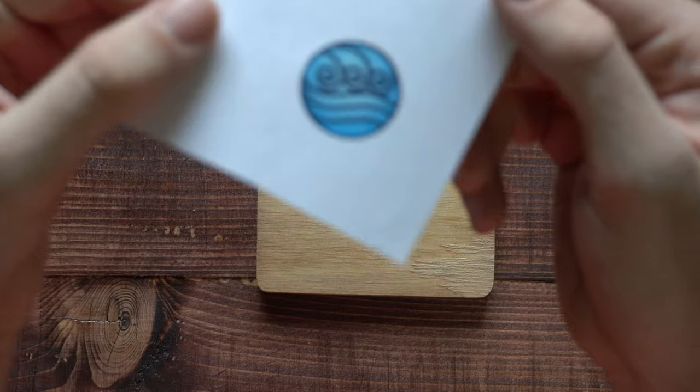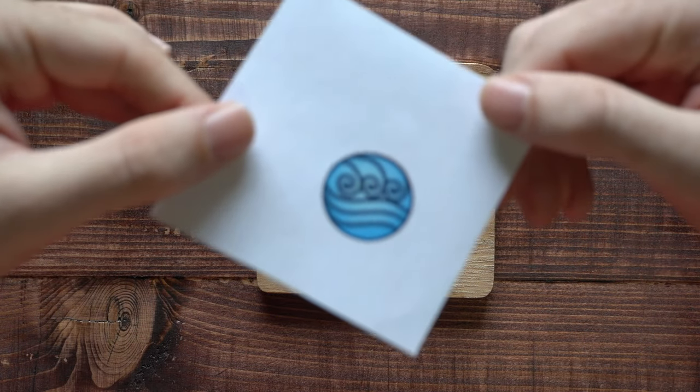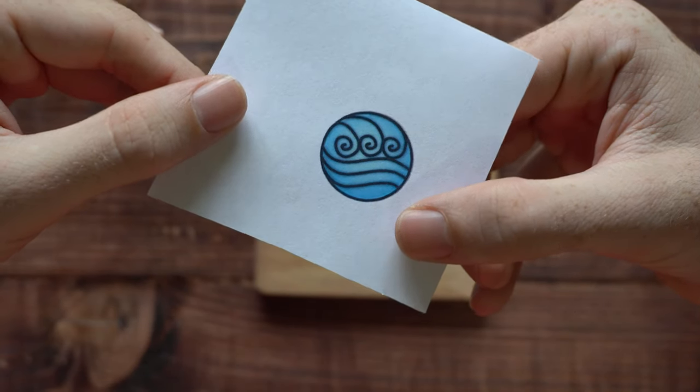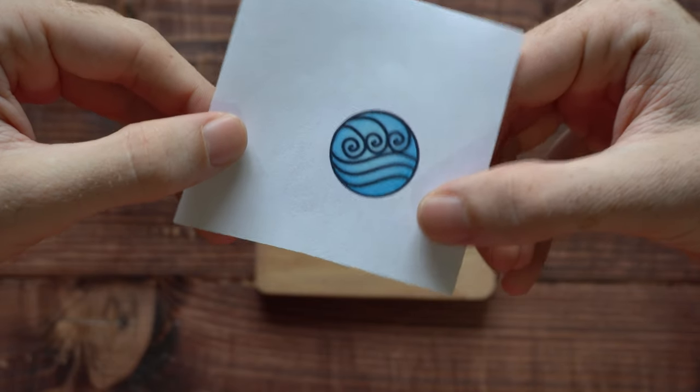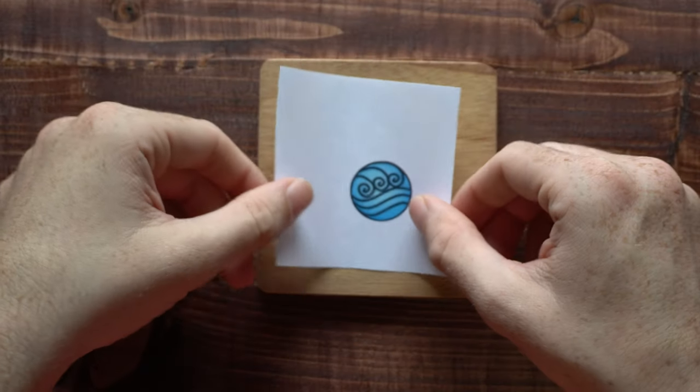First, you're going to need to get the symbol found in Katara's necklace and print it out on paper. You can either find it online or draw it yourself using something like Illustrator or Procreate.